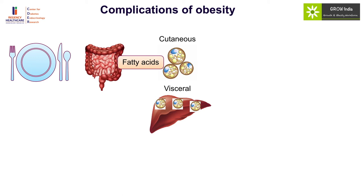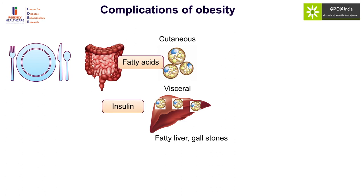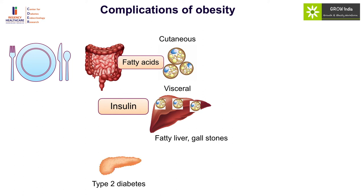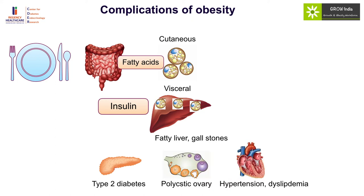The key concept in adiposity complications is to track and keep tracking one's BMI percentile and not aim for significant BMI changes, to avoid visceral adiposity. Once visceral adiposity sets in, it results in fatty liver, non-alcoholic steatohepatitis, and gallstones, but also causes insulin resistance with hyperinsulinism — a condition associated with the subsequent development of impaired glucose tolerance, type 2 diabetes, polycystic ovarian syndrome, hypertension, and dyslipidemia.